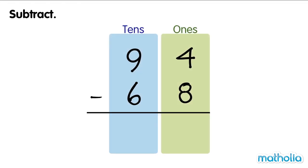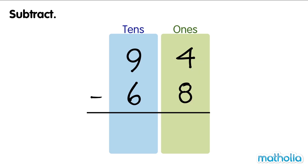Let's find 94 minus 68. Start by subtracting the ones. We cannot subtract 8 ones from 4 ones. So we regroup 1 ten into 10 ones. Now we have 8 tens and 14 ones. Now we can subtract the ones.